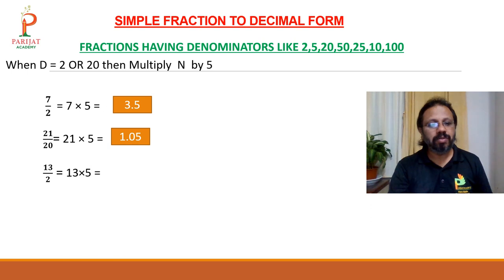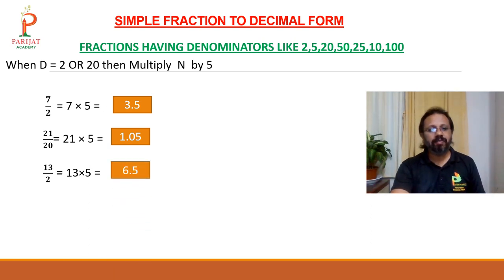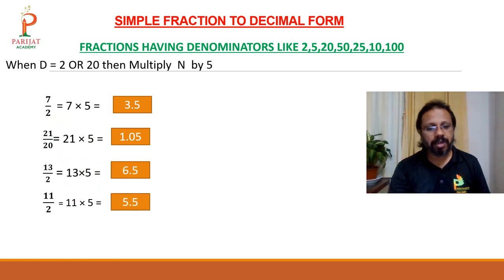13 upon 2: multiply 13 by 5 to get 65. The denominator is single digit, so leave the last digit and give the decimal — answer is 6.5. Similarly, 11 upon 2: multiply 11 by 5 to get 55, denominator is single digit, so leave last 1 digit — answer is 5.5.